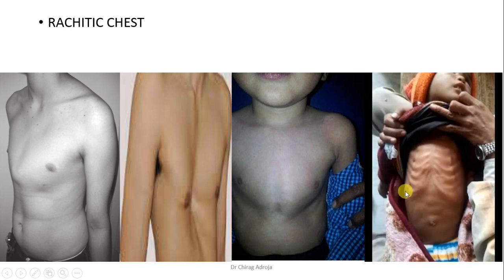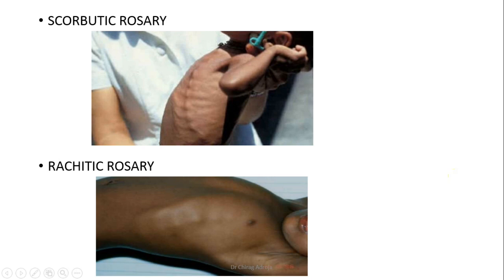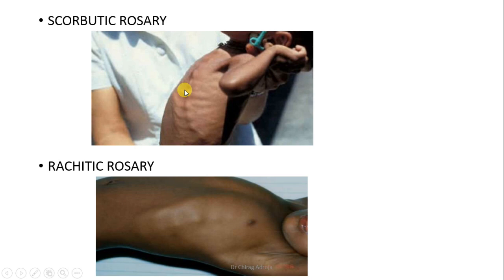Rickets rosary looks like a mala (garland). How to differentiate scorbutic rosary and rickets rosary: rickets rosary is due to vitamin D deficiency while scorbutic rosary is due to vitamin C deficiency. In rickets rosary, bead-like enlargement is present at the costochondral junction. In scorbutic rosary, there is no bead-like enlargement but it develops because of inward displacement of the sternum — the costochondral angle is more angulated due to backward displacement of the sternum, while in rickets the sternum is forwardly displaced. Scorbutic rosary is painful while rickets rosary is painless.